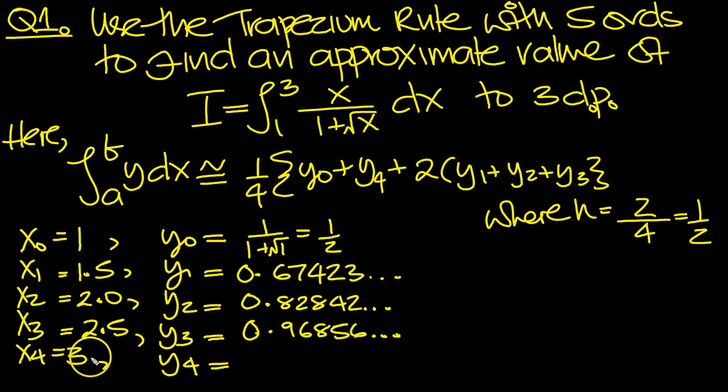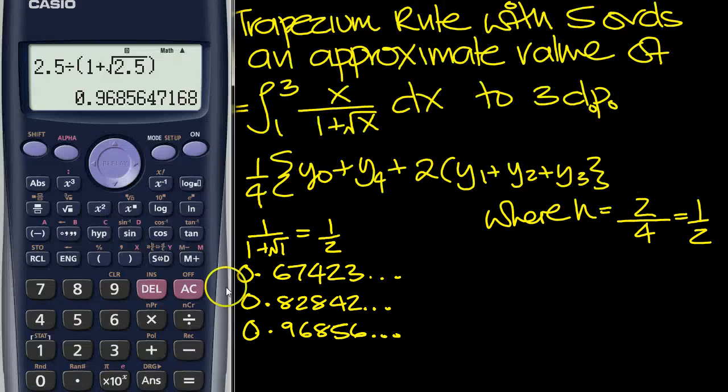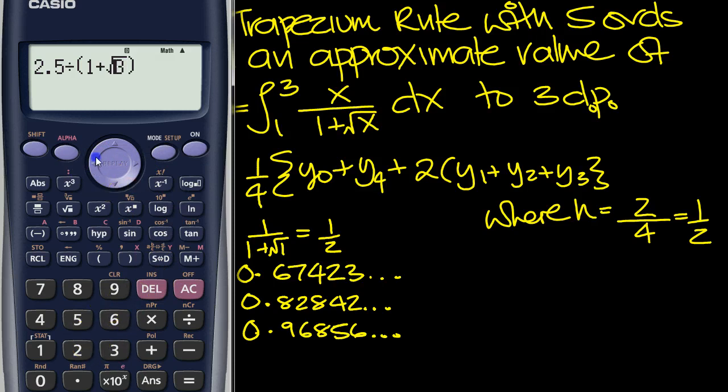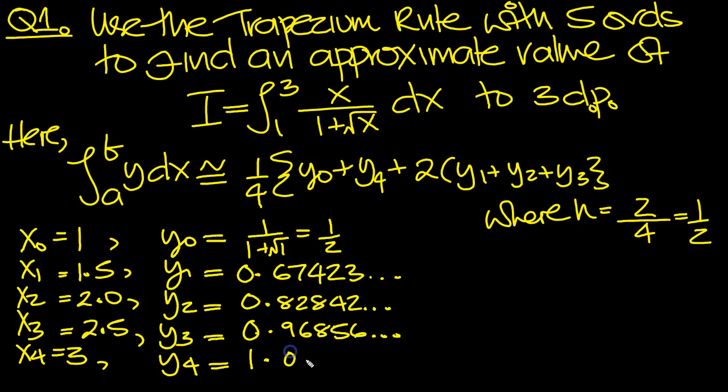And then y4 would be when x is 3. So again we need to put it in here. Put in 3. And over here put in 3. And then we get 1.09807. So there's our values then. We need to tap them in the calculator.